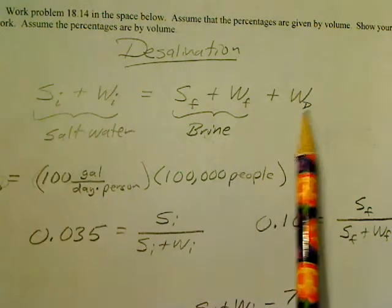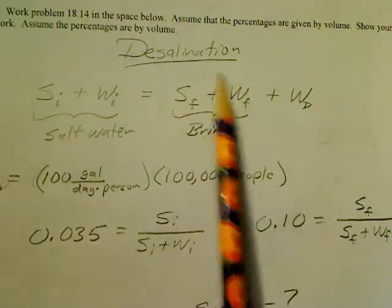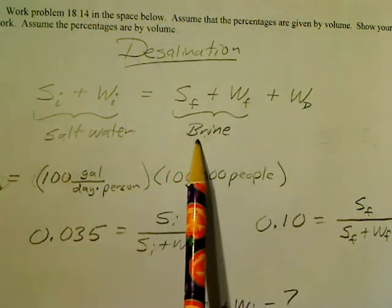remove some of the water from it, and end up with a saltier solution as a byproduct. This is called brine.